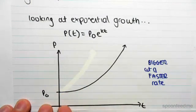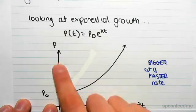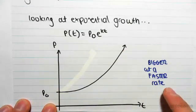So we have an initial population. As we're going in time, the population is getting bigger at a faster rate.